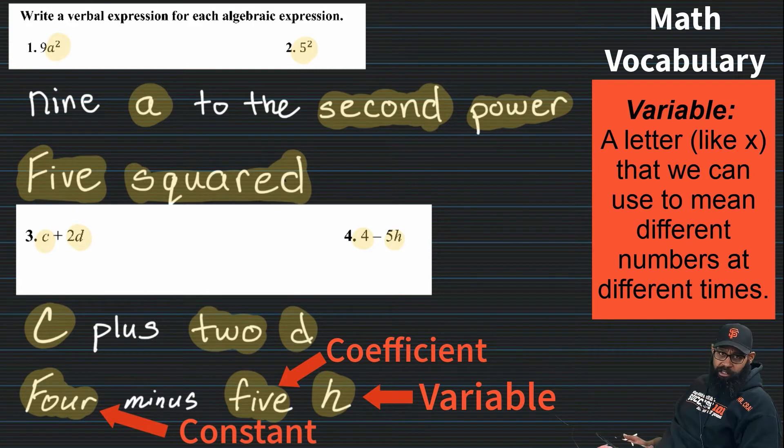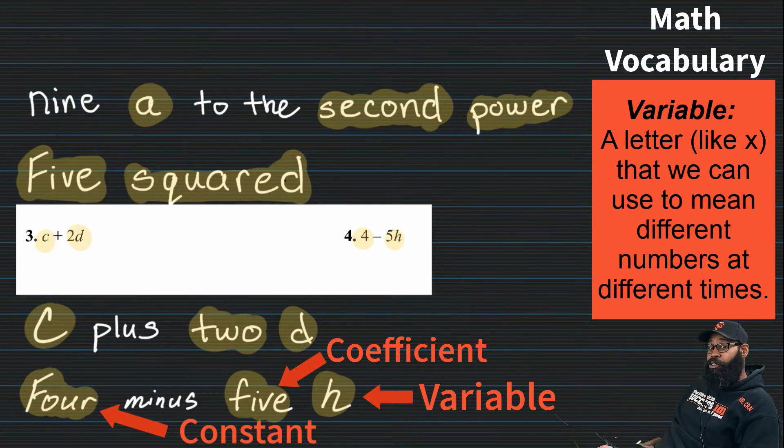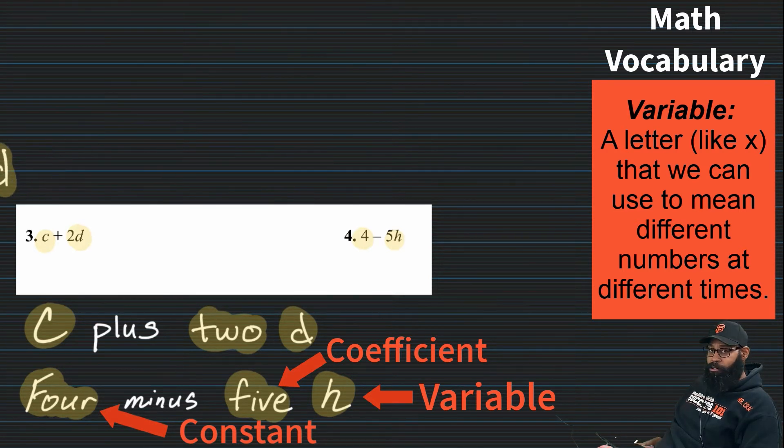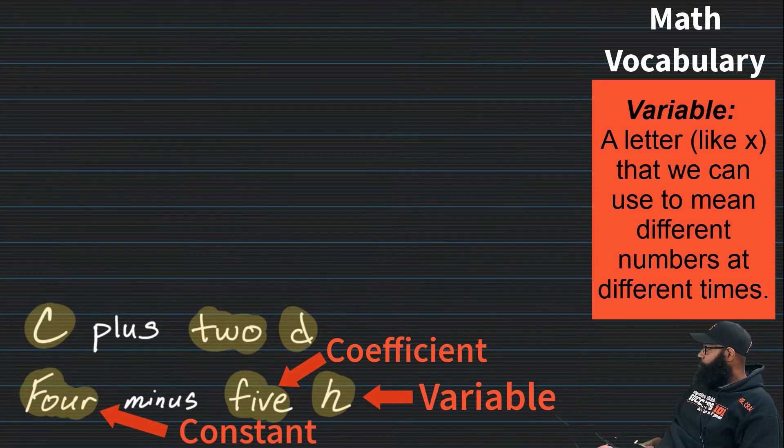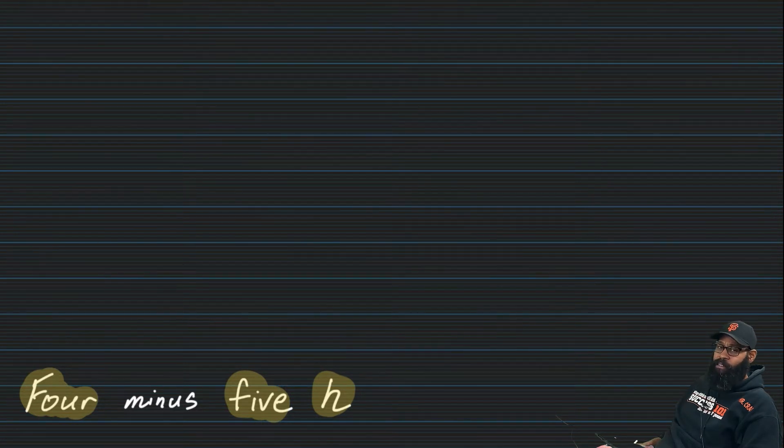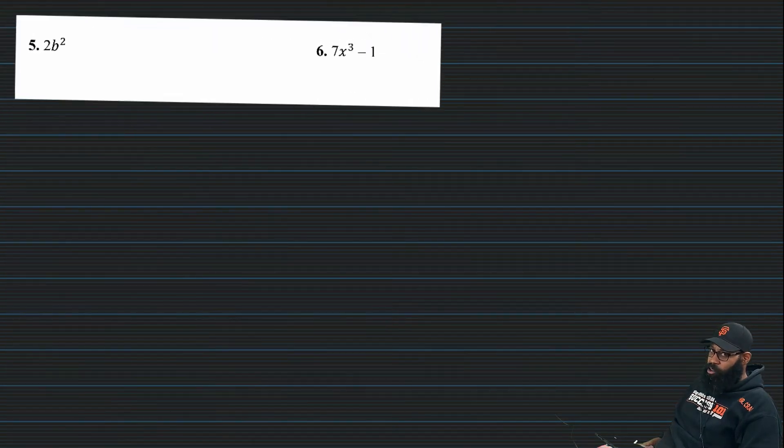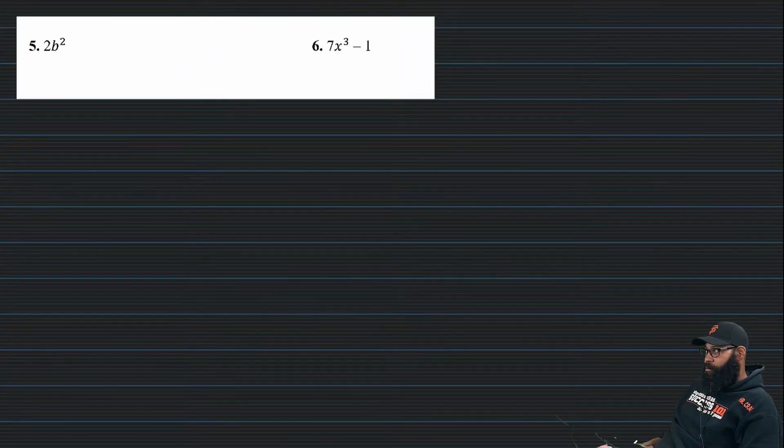My constant four. My coefficient five. And of course my variable H. So again guys, as you're here enjoying the video, I like to throw out as much vocabulary. Because I always tell my kids, when you understand what you hear, you understand what you're doing. So coefficient, variable, base, exponent, operation. All those good algebraic terms, right? Vocabulary.